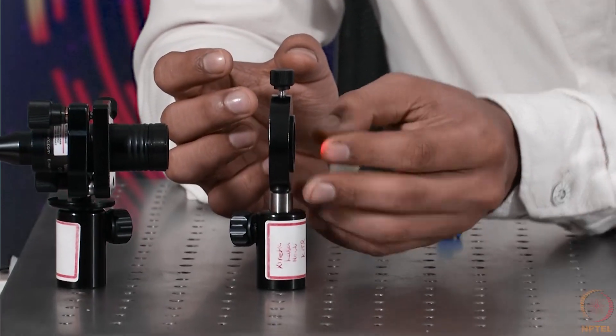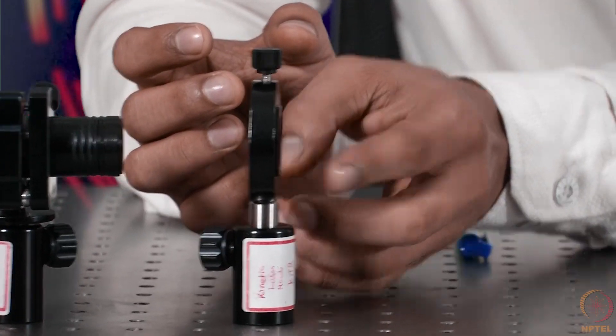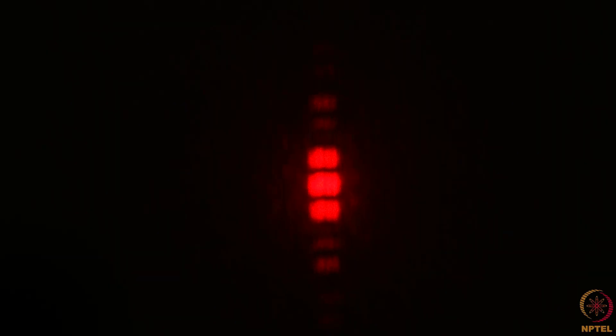This is double slit. I am placing it in here. Now you can see the diffraction pattern for the double slit. And this is the interference pattern that we are getting for double slit.